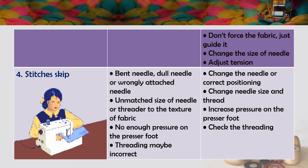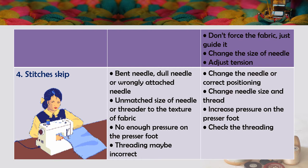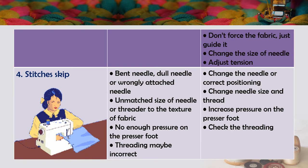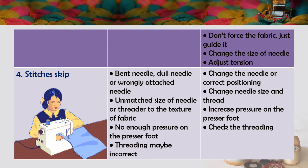Additional remedies for needle thread breaks: don't force the fabric — just guide it. Change the size of needle and adjust the tension. The fourth machine trouble is stitches skip. Causes: bent needle, dull needle, wrongly attached needle, mismatched needle or thread size to fabric texture, not enough pressure on the presser foot, or incorrect threading. Remedies: change the needle or correct its positioning, change needle size and thread, increase pressure on the presser foot, and check the threading.